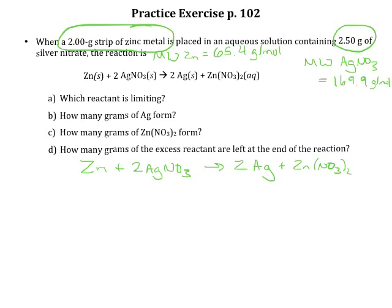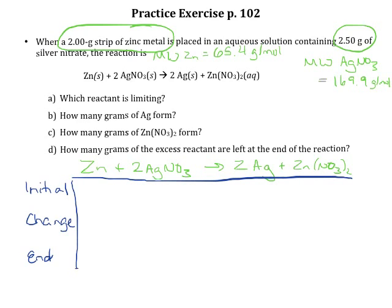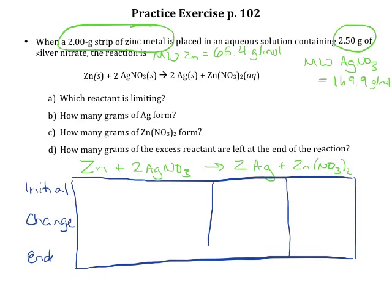The reaction produces two moles of solid silver and one mole of zinc nitrate. You can fill in Initial, Change, and End to set up the table, making a column for each compound.